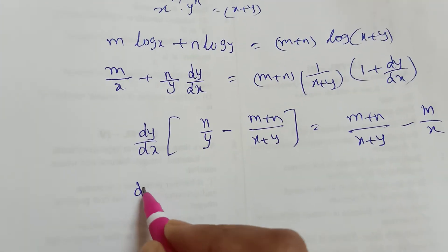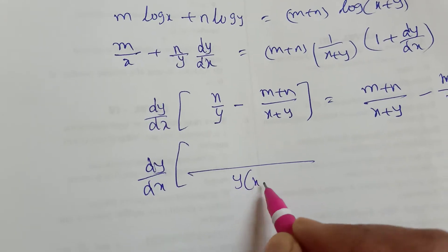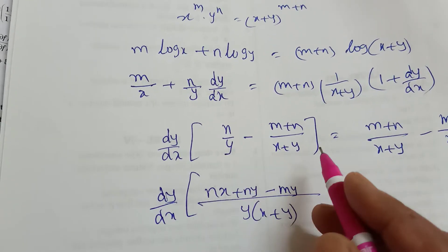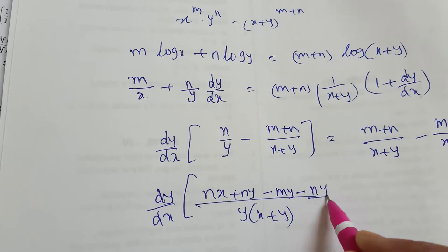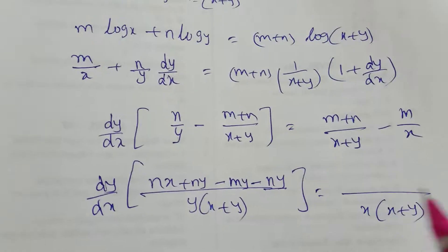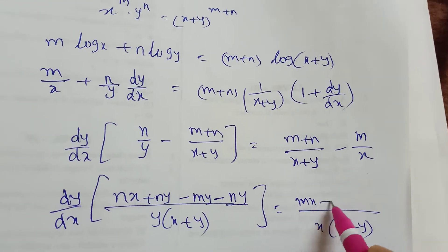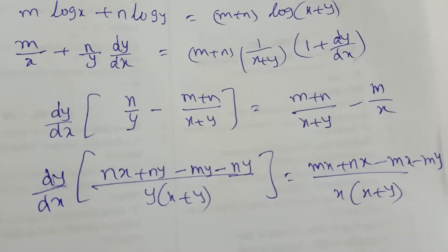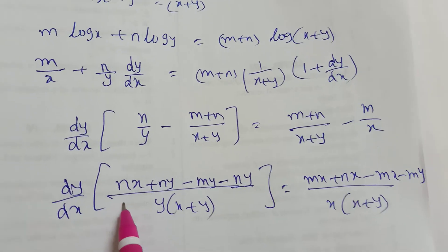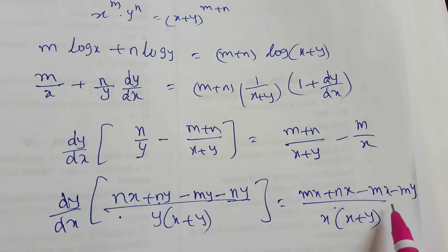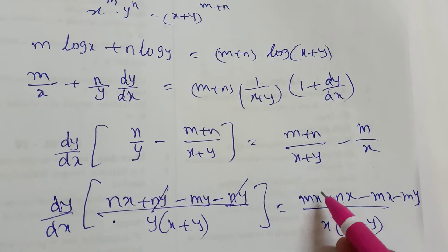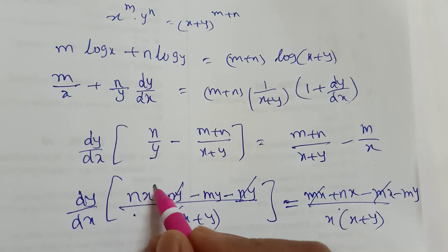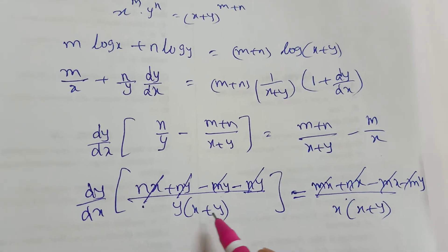This term will be negative. Now taking LCM, dy by dx times y into x plus y equals the right side expanded: n x plus n y minus m y minus n y. On the right side: x into x plus y. Taking LCM on numerator: m x plus n x minus m x minus m y. Observe — same terms appear: n x and n x cancel, m x and m x cancel, n y and minus n y cancel, m y terms cancel. Then x plus y also cancels.